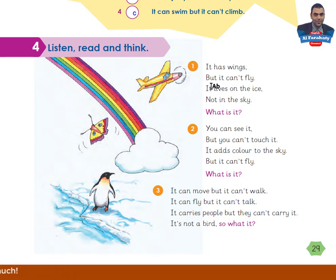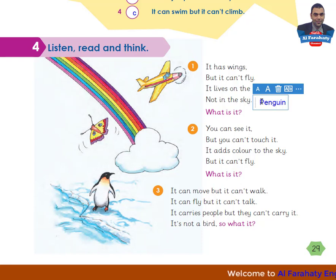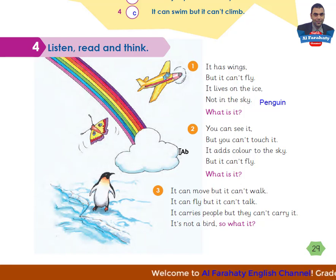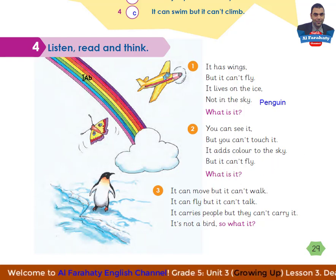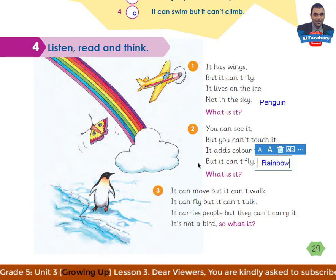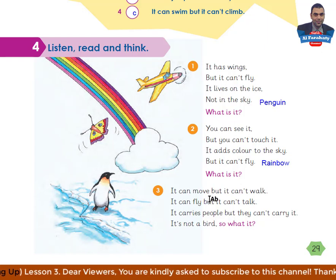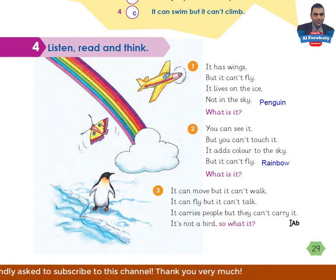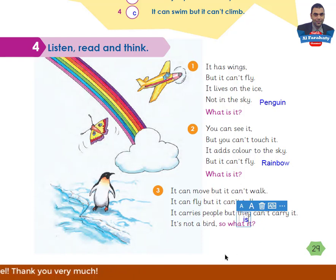Let's solve the riddles. Riddle 1: it has wings but it can't fly, it lives on the ice not in the sky - it's a penguin. Riddle 2: you can see it but you can't touch it, it adds colour to the sky - it's a rainbow. Riddle 3: it can move but it can't walk, it can fly but it can't talk, it carries people but they can't carry it, it's not a bird - it's a plane.